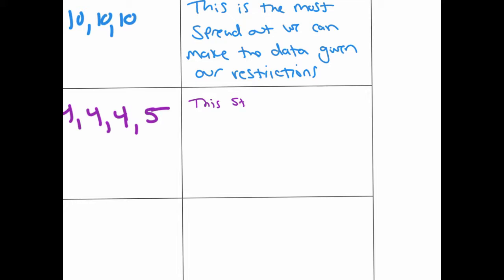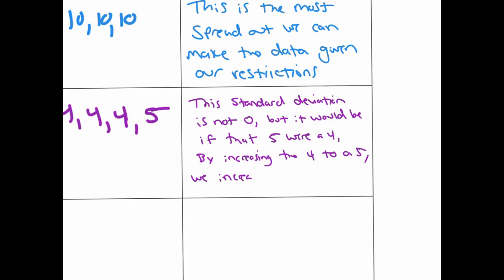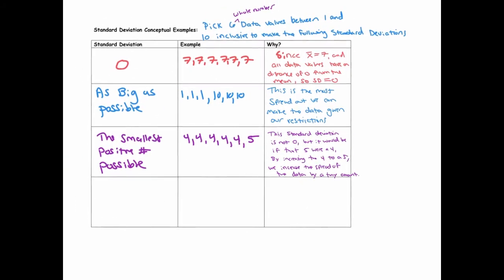But I'm just going to indicate that this standard deviation, it's not zero. Not all the data values are the same. So, but it would be if that's a five or a four. Okay. By increasing the four to a five, we increase the spread. The spread of the data by a tiny amount. Okay, but that's, I mean, that's the smallest amount we can increase the spread.